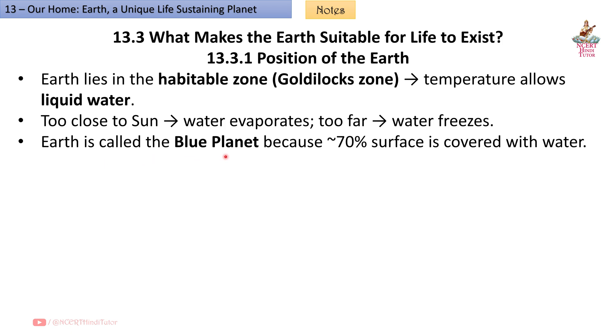Earth is called the blue planet because approximately 70% of its surface is covered with water. Mars lies at the edge of the habitable zone and may have had liquid water in the past.